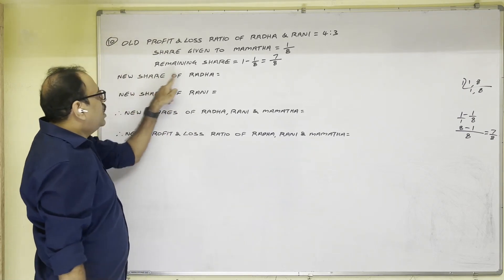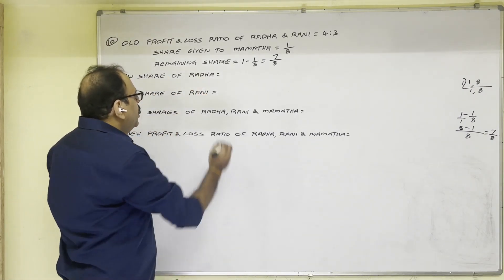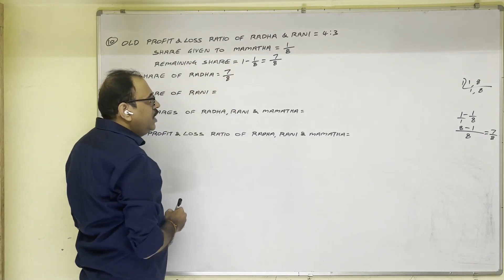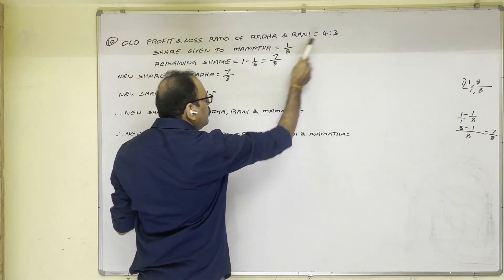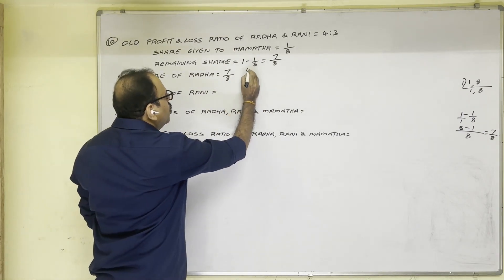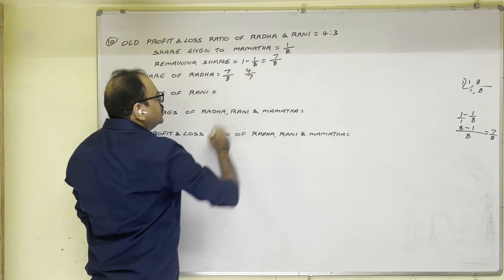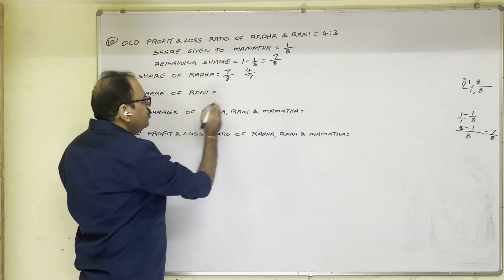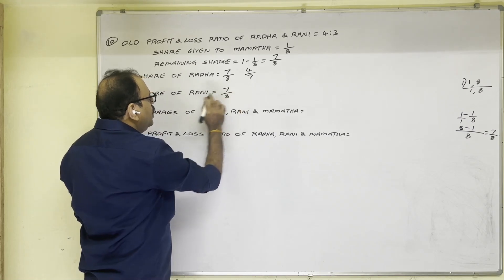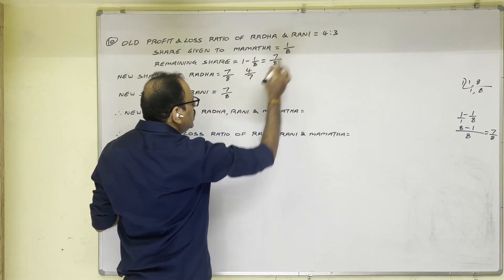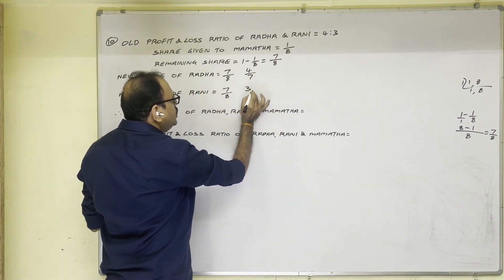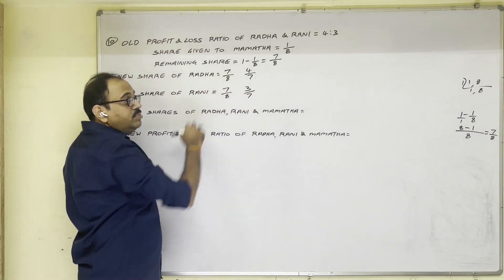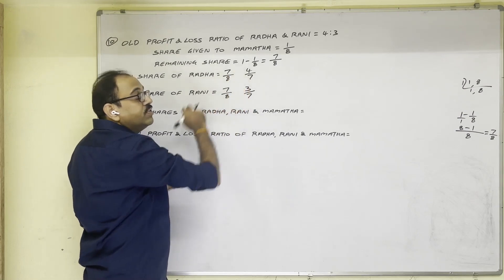New share of Radha, how much she takes? Remaining share is seven by eight. In this, four-seventh she takes. So four-seventh of seven-eighth the first partner takes. Similarly, in remaining share Rani should take three-seventh. Three-seventh of seven-eighth Rani should take.